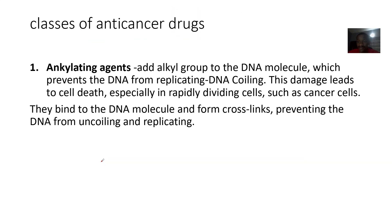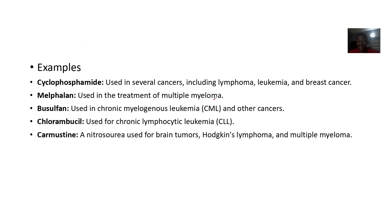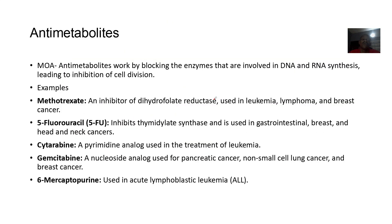Alkylating agents add an alkyl group to the DNA molecule. Since an alkyl group is not supposed to be in the DNA molecule, this disrupts how the DNA replicates or forms copies of itself, leading to cell death — especially in rapidly dividing cells. Examples include cyclophosphamide, melphalan, busulfan, chlorambucil, and carmustine.